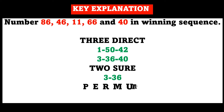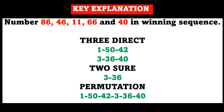We also have permutation numbers, also called two directs. The short permutation for now is 1, 50, 42, 3, 36, and 40. If we are lucky we will get more three directs or two directs or more permutation numbers as we move on. We are trying to build on this particular key, and if we stop here, this will be the entire key that we have as numbers.